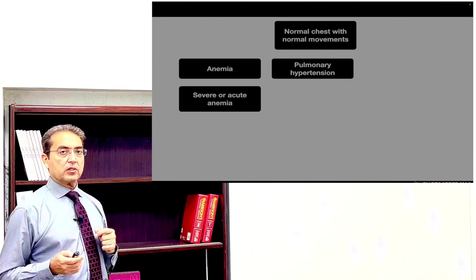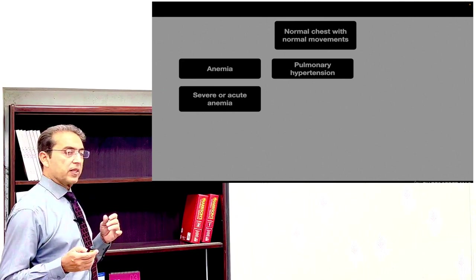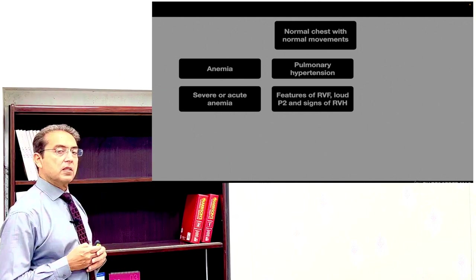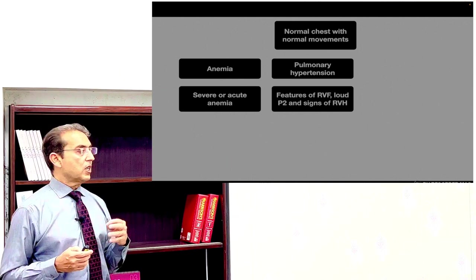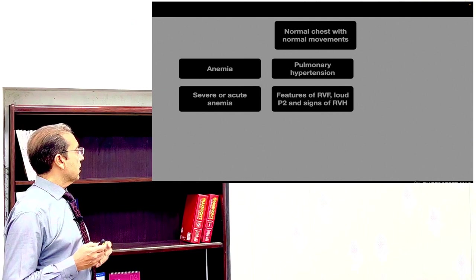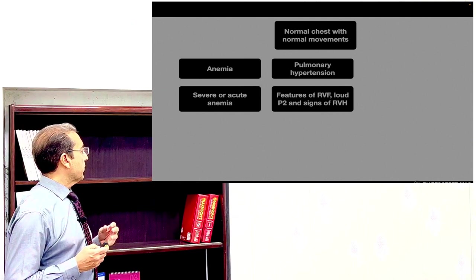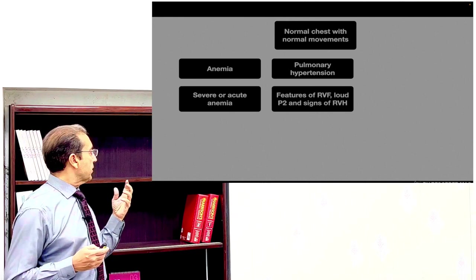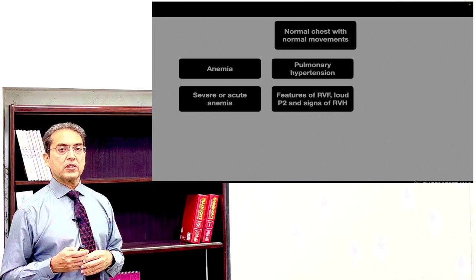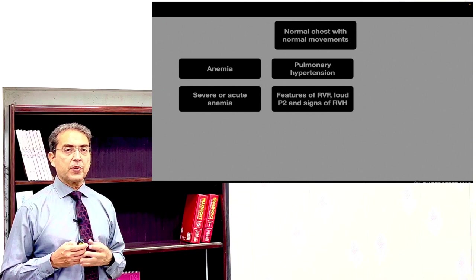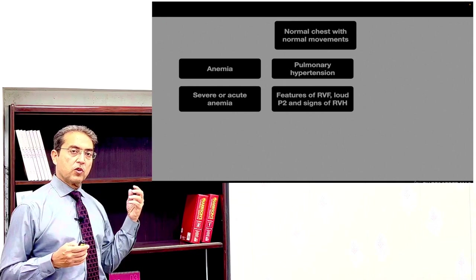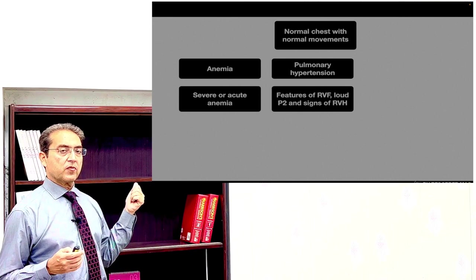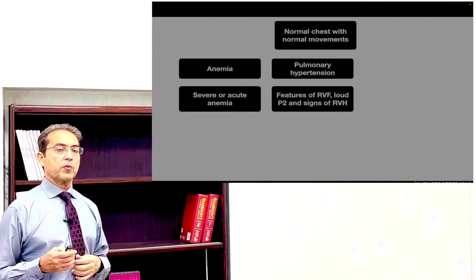In pulmonary hypertension, the patient complains of shortness of breath and chest examination tends to be normal. But precordial examination may reveal features of right ventricular hypertrophy and enlargement — there may be right ventricular failure, a loud P2, or a parasternal lift. So look for right ventricular hypertrophy and loud P2; if there is right heart failure, the patient may be suffering from pulmonary hypertension.